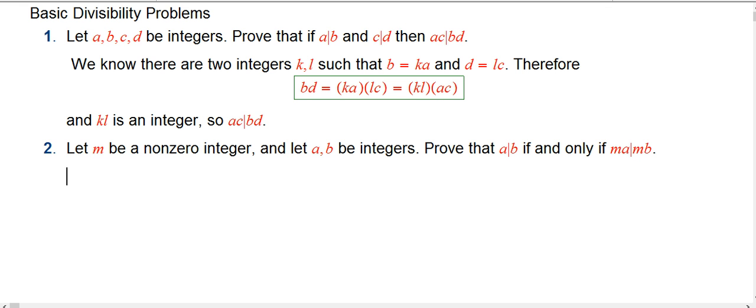Let M be a non-zero integer. Okay, we'll probably use that non-zero in here somewhere. And let A and B be any integers, so they could be zero.